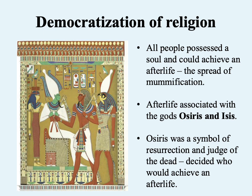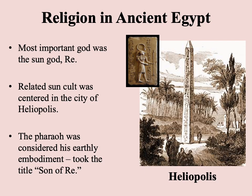It's interesting to note this idea of resurrection parallels aspects of the Christian faith — which doesn't mean it was borrowed, but it is interesting that you have this similarity. During the Middle Kingdom, one very important god is the sun god Ra, which becomes tied to the pharaoh, who is considered his earthly embodiment, taking the title Son of Ra. The pharaoh is the incarnation of the god Ra, but his title is Son of Ra — very similar to how the relationship of Jesus to the Father is portrayed in the Christian faith.